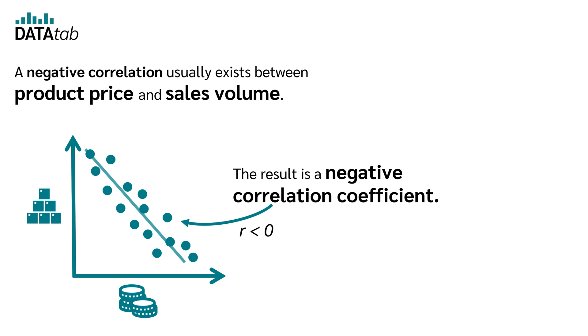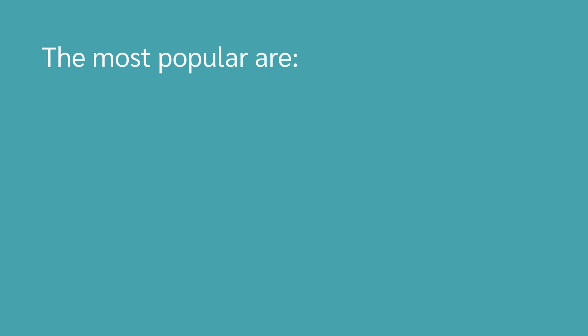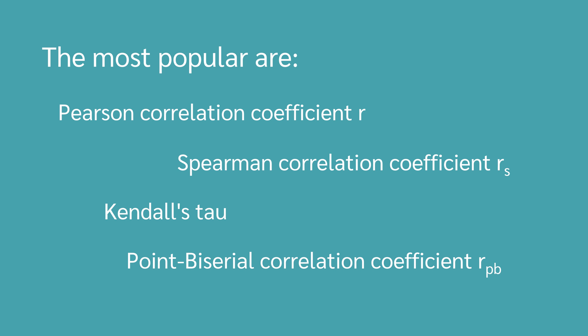The result is a negative correlation coefficient. There are different correlation coefficients. The most popular are the Pearson correlation coefficient r, the Spearman correlation coefficient rs, Kendall's tau, and the point-biserial correlation coefficient rpb.